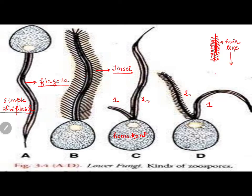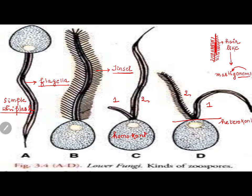These hair-like structures are called mastigonemes. The word 'mastigos' means flagella, and 'neema' means thread — so mastigonemes are thread-like structures on the flagella. This gives better movement, better contraction, and accelerates locomotion. Here you can see the zoospore which is heterocont because it has two types of flagella — one is tinsel and one is whiplash or simple, where I don't see mastigonemes. Because it has two types of flagella, it is a heterocont zoospore.